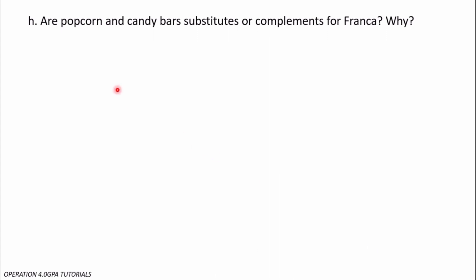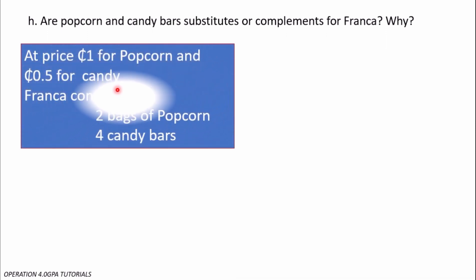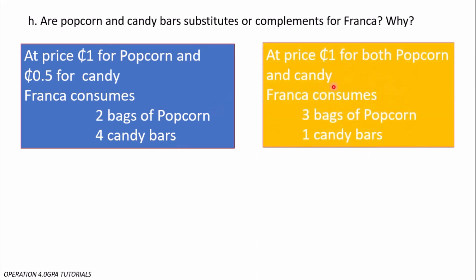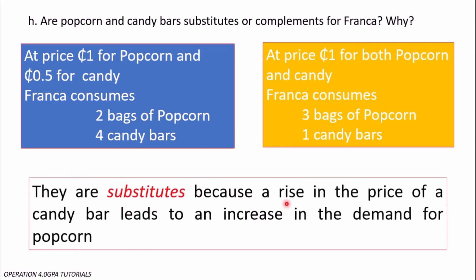The next question asks: are popcorn and candy bars substitutes or complements for Franca? Substitutes can be used in place of each other; complements are used jointly. At the original prices — 1 cedi for popcorn and 50 pesewas for candy — she consumed two bags of popcorn and four candy bars. When the price of candy increased to 1 cedi, she consumed three bags of popcorn and one candy bar. She reduced candy consumption from four to one and increased popcorn from two to three, substituting candy for popcorn. So they are substitutes, because a rise in the price of candy bars leads to an increase in the demand for popcorn.